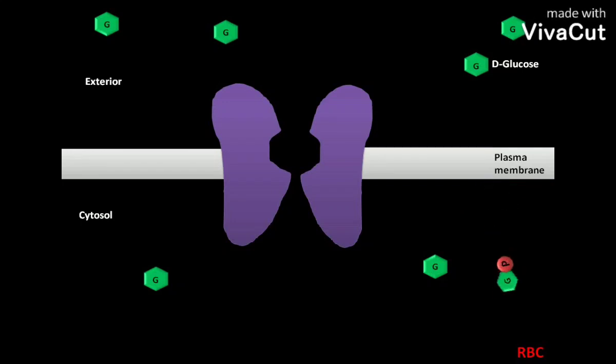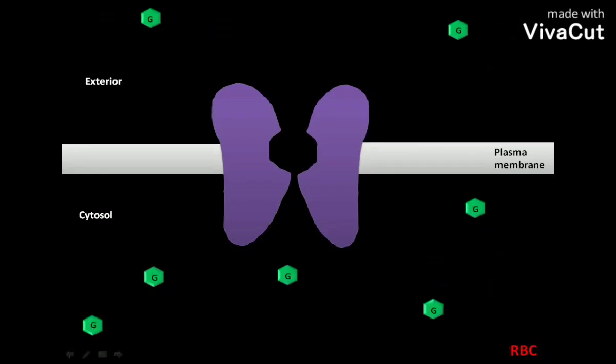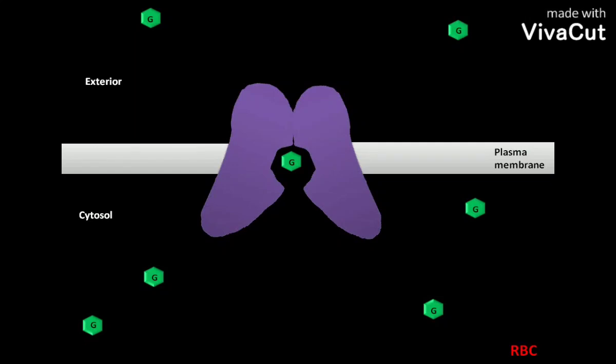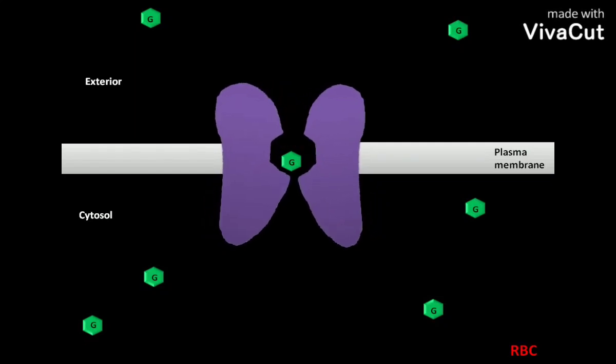If the concentration of D-glucose is higher in the cytosol of RBC than the exterior, then the cycle will work in reverse. As a result, D-glucose moves from the cytosol of RBC to the exterior.